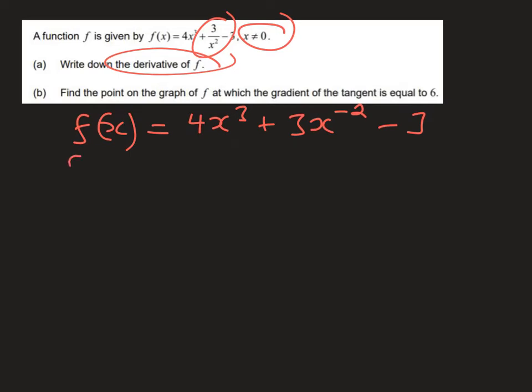Now we can differentiate it. So the symbol for the derivative is f'(x). And we can now differentiate that. So that's going to be 4 times 3 is 12x². This is going to be -6x^(-3), remember, and then the constant term disappears.